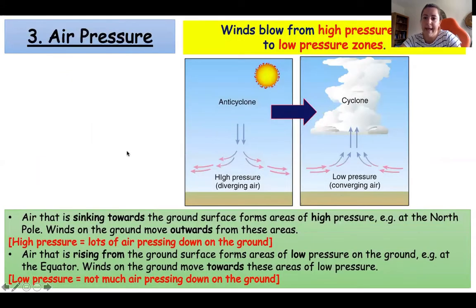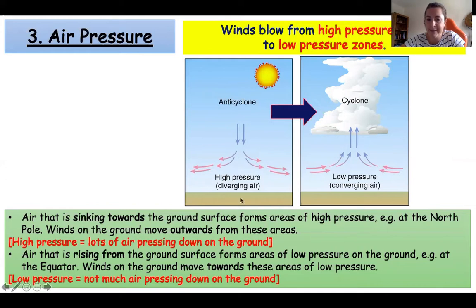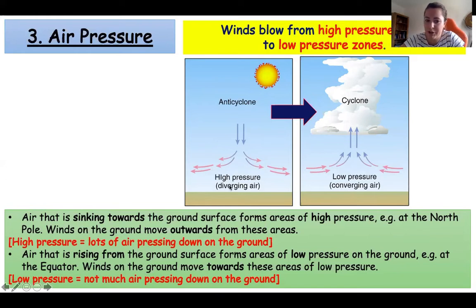Air pressure is the movement of air. Cold air sinking gives us high pressure on the Earth's surface. Warmer air that has been heated at the surface rises upwards, giving us low pressure because it's not pressing on the surface. So: high pressure means air moving down, low pressure means air moving up. Let's pull all three factors together into our global atmospheric circulation model.